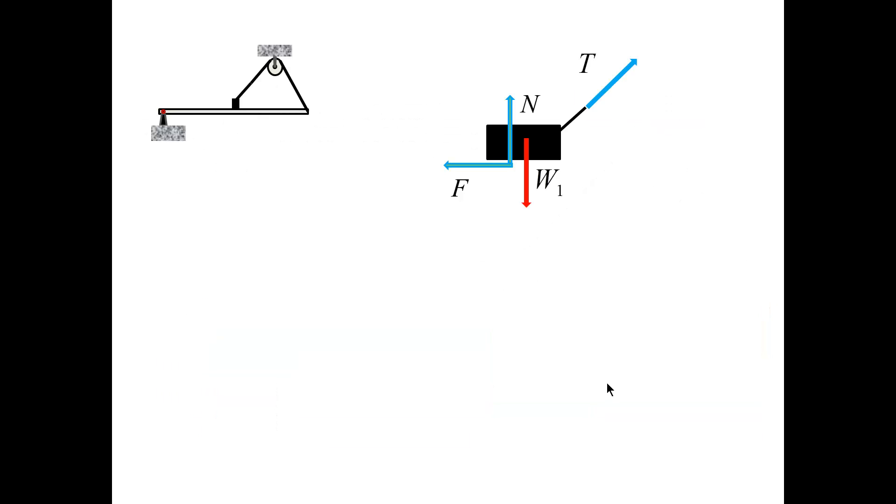We begin by drawing free body diagrams for the block and the beam. For the block, I have the normal and friction forces along the interface, the tension in the cable, and the weight.